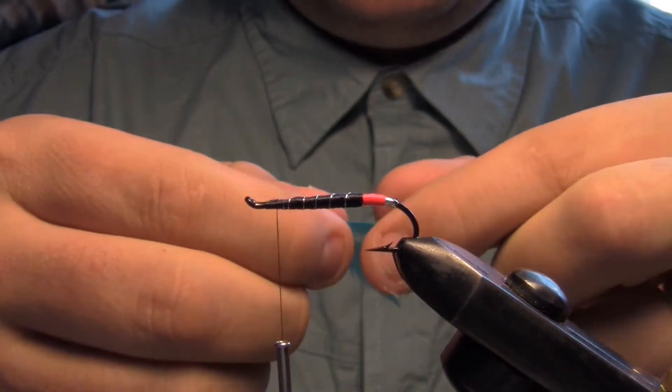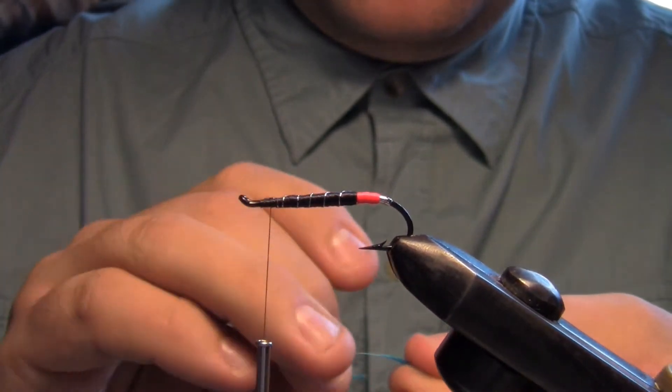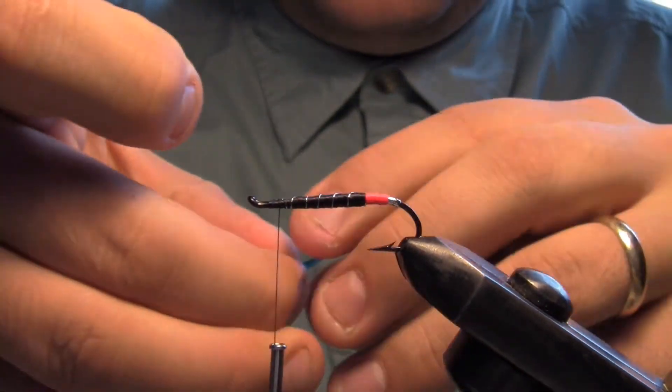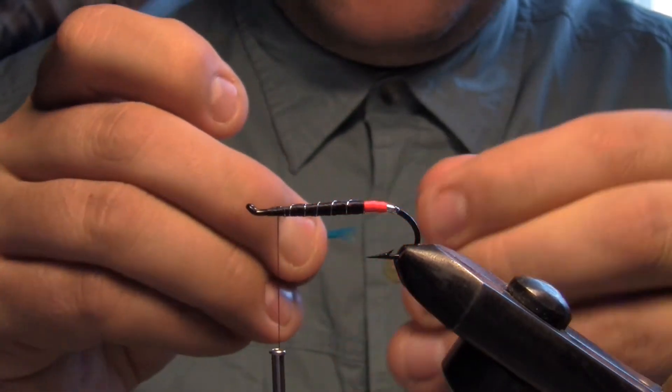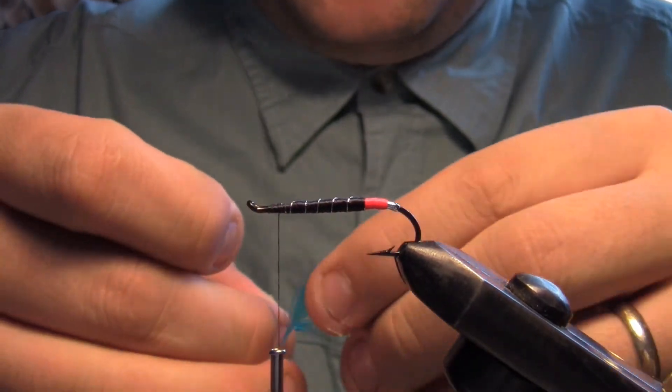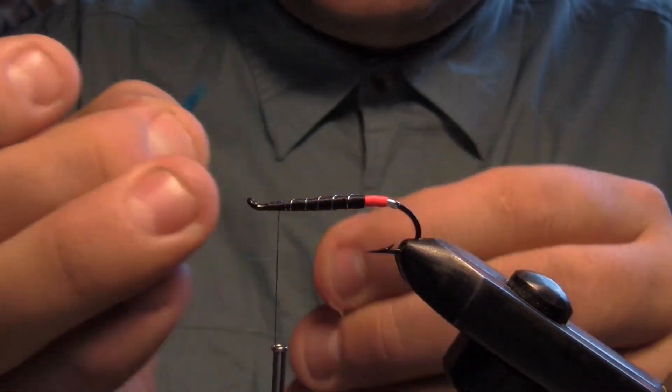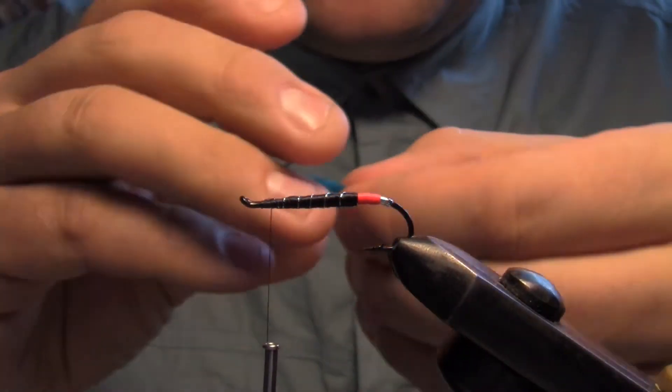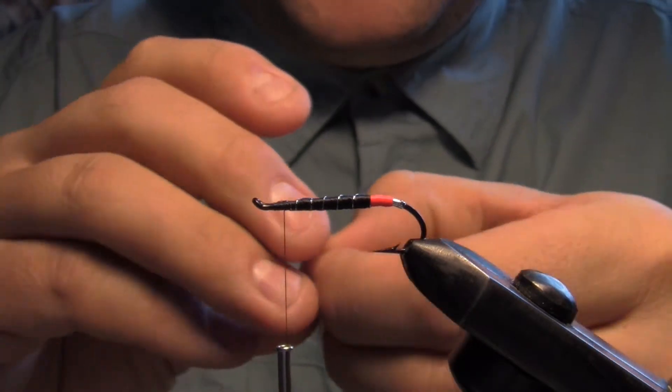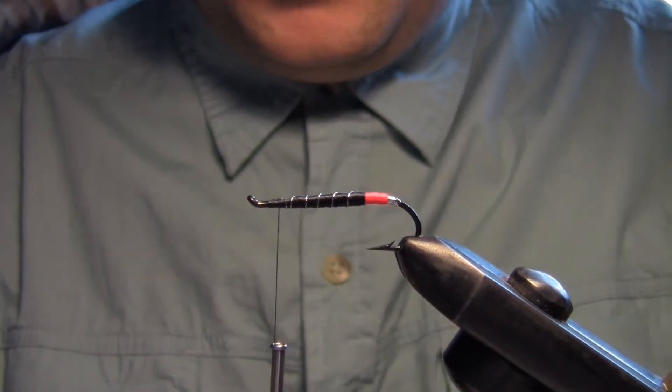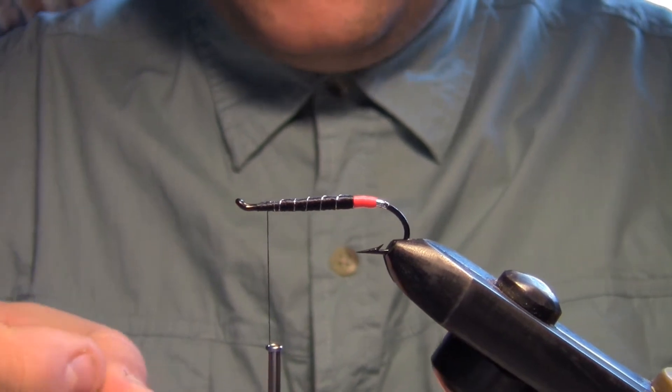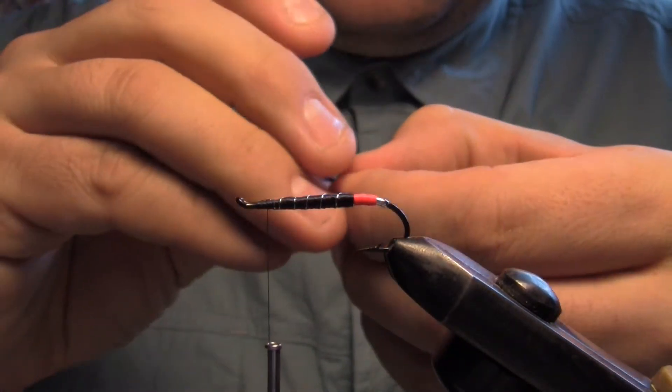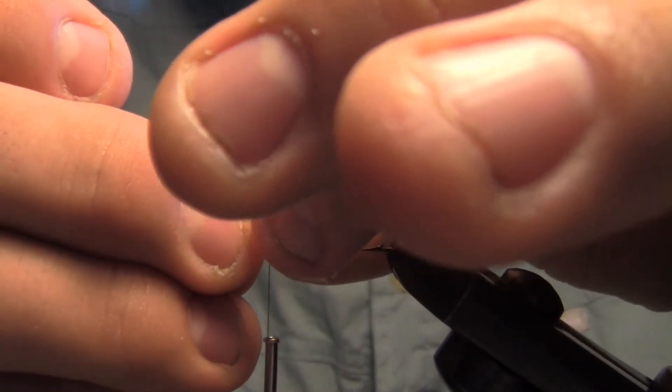Pinch some more there together. Blue Charm is a very very popular fly in Newfoundland. If you guys do any research on salmon fishing in Newfoundland through the Maritimes, Blue Charm is one of the most popular ones there. Like I say, this is just a little variance of that fly. A little bit of throat there.